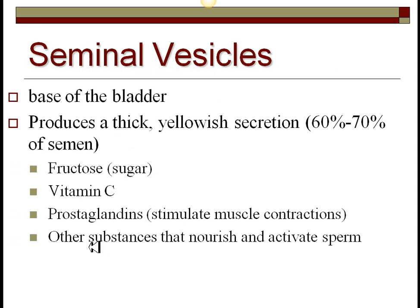The seminal vesicle is what actually produces what we call semen — a complex mixture of substances with the sperm all mixed in. It's located at the base of the bladder, connecting into the prostate gland. 60 to 70 percent of what you call semen is from this gland, mostly sugar, which is the food source for the sperm. They have very powerful flagella, so they need lots of sugar to make ATP to run their mitochondria.